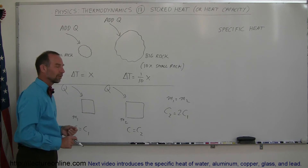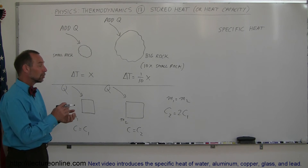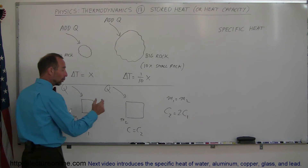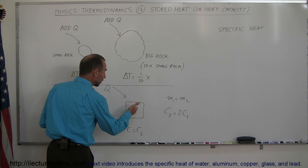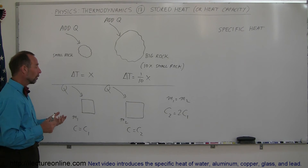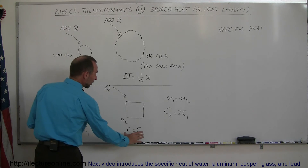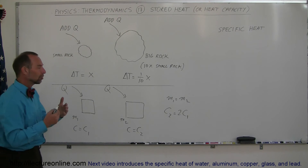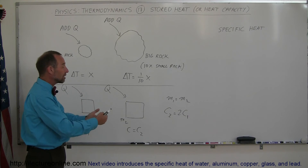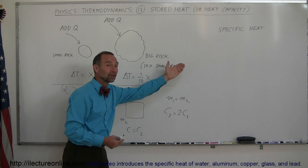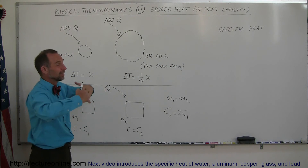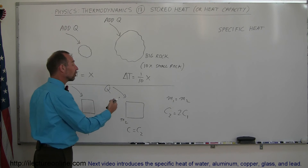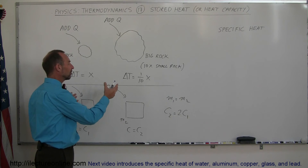What does it mean that the specific heat of one object is twice that of the other? It means you can add twice as much heat for the same temperature change. To raise it by one degree centigrade, you'd need twice as much heat for the second object. It almost acts as if it's a bigger object — it can store more heat not because it's bigger, but because it has a bigger specific heat. So an object can absorb more heat either because it's bigger or because it has a larger specific heat.